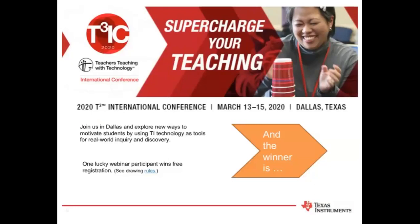A couple of things about the T-Cube conference: if you're interested in submitting a proposal to speak, those proposals are due very soon — this month or early next month, that deadline closes. Visit our website to learn more about submitting a proposal. Also, registration is open with a nice early bird price of $100. And as Daniel mentioned earlier, tonight we are giving away one free T-Cube International Conference registration. Tonight's lucky winner is Peter Ward — congratulations, Peter! We'll be in touch over email in the next couple of days. We hope to see Peter and everyone else at the T-Cube International Conference.